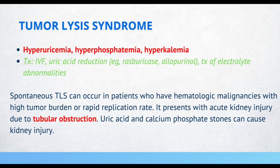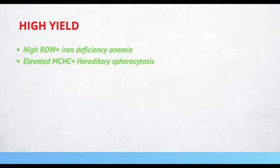A high red blood cell distribution width (RDW) should make you think about iron deficiency anemia. If you see an elevated MCHC, think about hereditary spherocytosis.